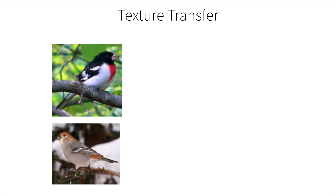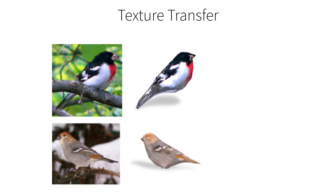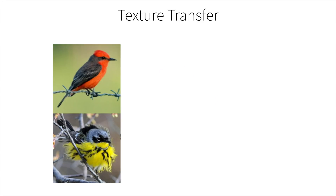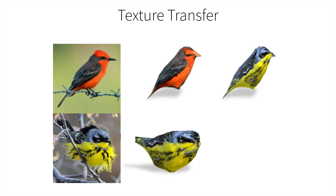We can also use our output to transfer the texture from one bird to another. For example, given these two images of birds, we first obtain their reconstructions with texture. Because the texture maps are in a canonical appearance space, we can simply swap the predicted texture maps and easily transfer the texture of the second bird to the first bird, and vice versa. Texture transfer also works even when the birds have different shapes.